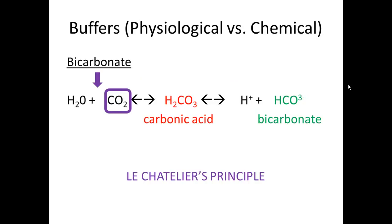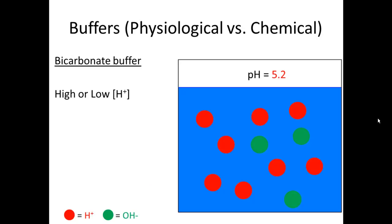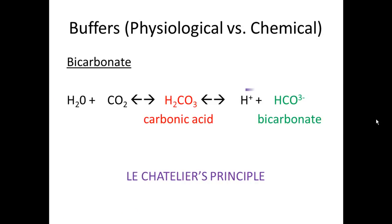If CO₂ is low, the reaction moves left to replace it. In a solution with high H⁺ at pH 5.2, Le Chatelier's principle drives the reaction left to decrease that concentration — adding bicarbonate buffer which combines with the hydrogen ions, eventually producing more CO₂ that we breathe out.